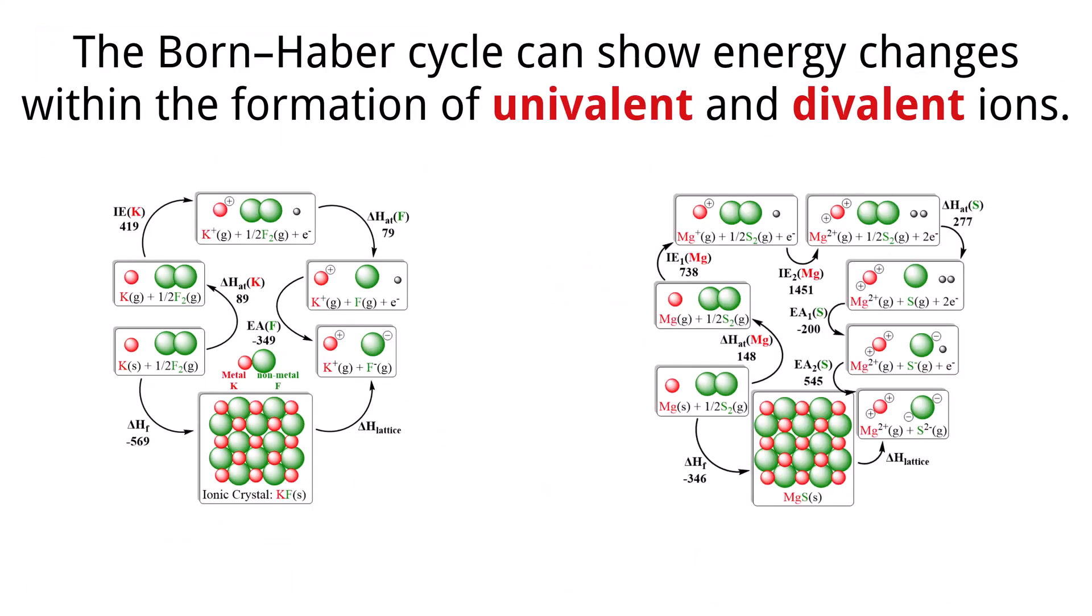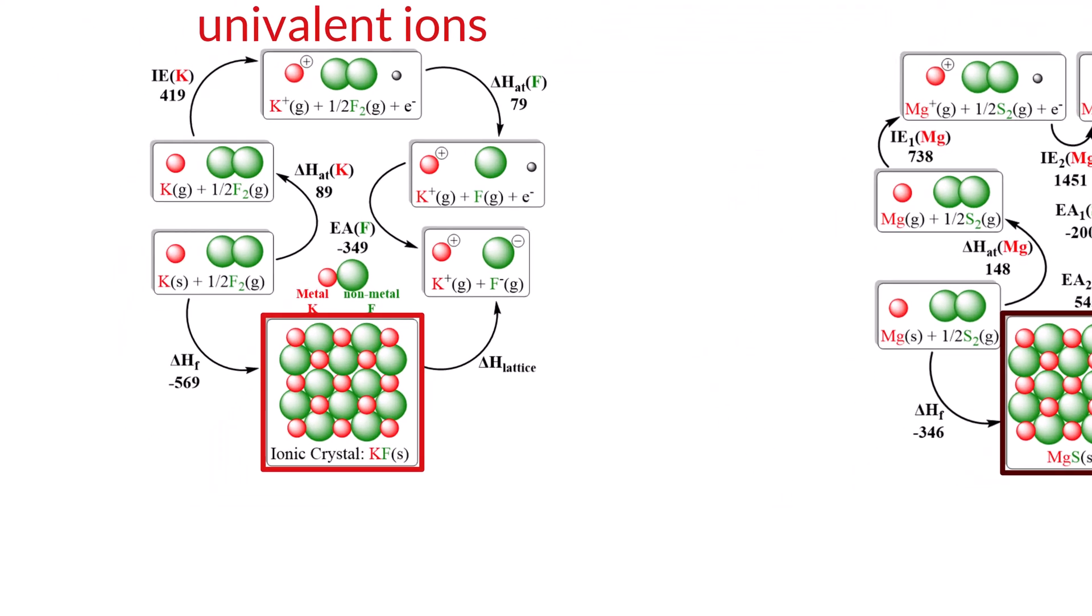To understand how to interpret and determine values, specifically lattice enthalpy from a Born-Haber cycle for compounds composed of univalent and divalent ions, let's examine the formation of KF and MgS, potassium fluoride and magnesium sulfide. Potassium fluoride is for the univalent ions. For potassium fluoride, the formation reaction is K plus one-half F2 going to KF.